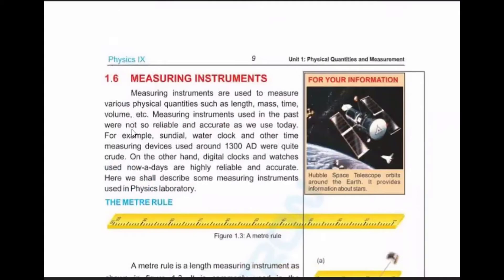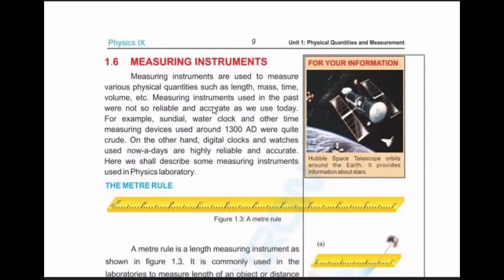Measuring instruments used in the past were not so reliable and accurate as we use today. Today we can measure with accuracy of 0.001 seconds or 0.001 millimeters. A ballpoint pen tip is 0.8 mm, which is a very small measurement.